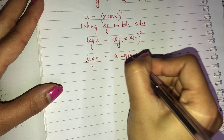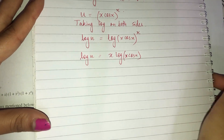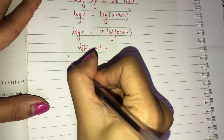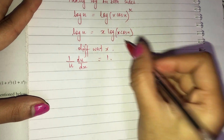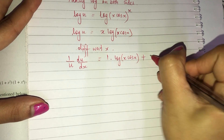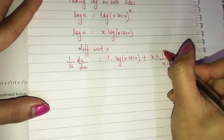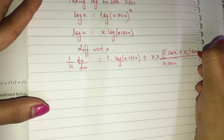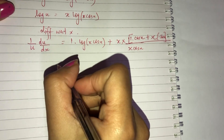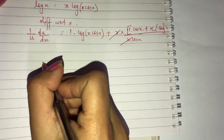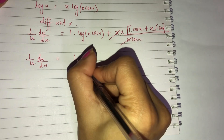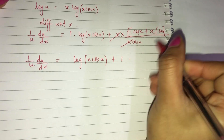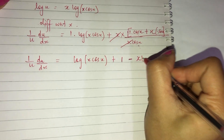Now differentiate with respect to x: (1/u)·du/dx = log(cos x)·1 + x·(1/cos x)·(−sin x). The x cancels out. Dividing cos/cos gives 1, and −x·sin/cos gives −x·tan x. So we simplify using the identity.